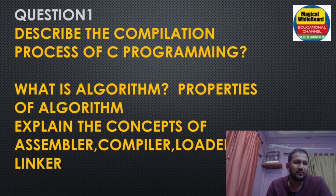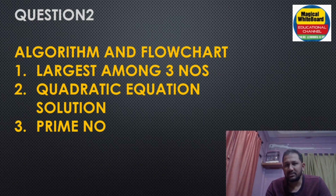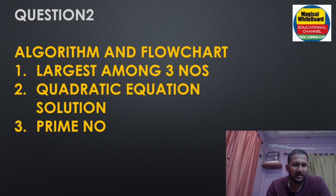This is the first important question. The next important question is about algorithm and flowchart. An algorithm is a step-by-step procedure to solve any problem. A flowchart is a pictorial form — it uses symbols and shows how the algorithm executes step by step in diagram form.